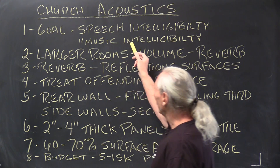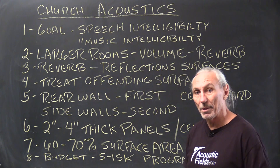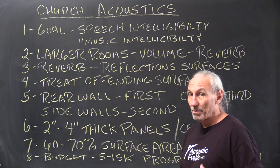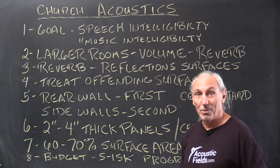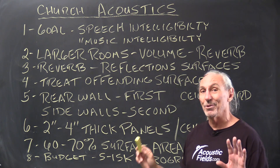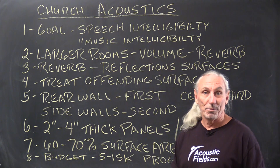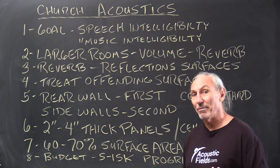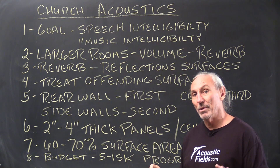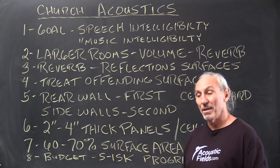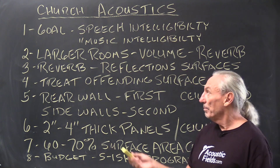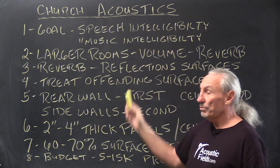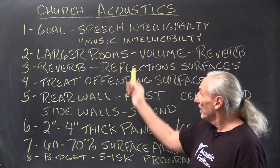The first goal we must consider with churches is speech intelligibility, because we have spoken word and we have a musical word. So we have to be able to hear the spoken word and we also have to hear the musical word through something called music intelligibility. Now there's no such term — there is a term called speech intelligibility, but music intelligibility, no such term — but I think it illustrates what we're after here. Speech and music in a large room require different types of treatment. We usually need to add more when dealing with music because it involves greater amplitudes. So the bottom line is we have two things to take into consideration: speech and music.